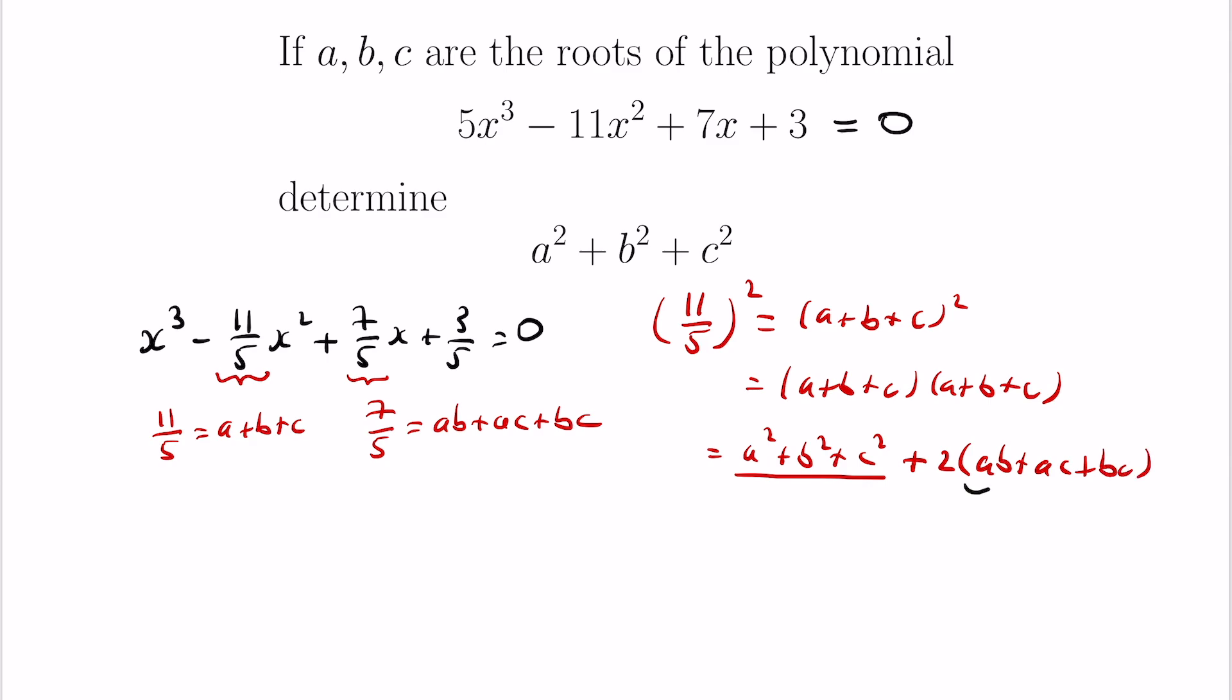But luckily for us we actually have access to this by Vieta's formula. It's 7 fifths. So all together we can rearrange and figure out that a squared plus b squared plus c squared is equal to 11 fifths all squared minus twice 7 fifths. Great and we can compute this exact value to figure out what a squared plus b squared plus c squared is.